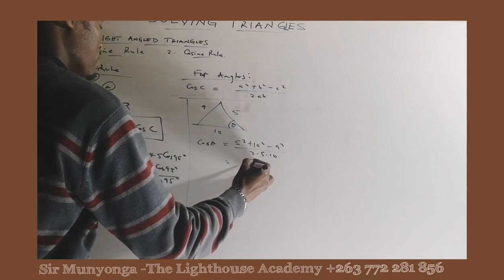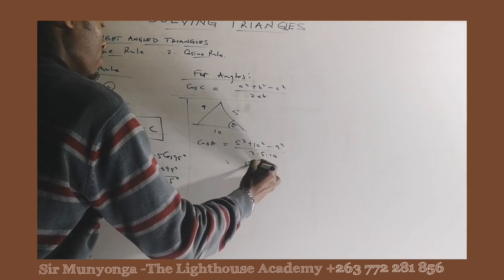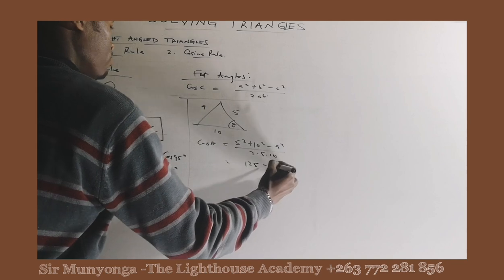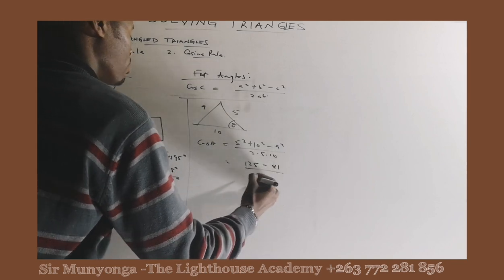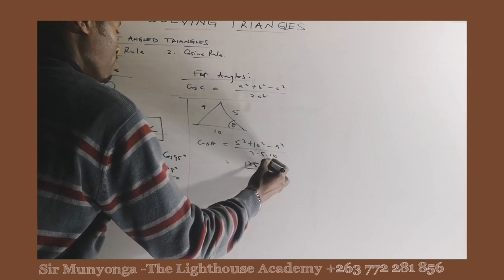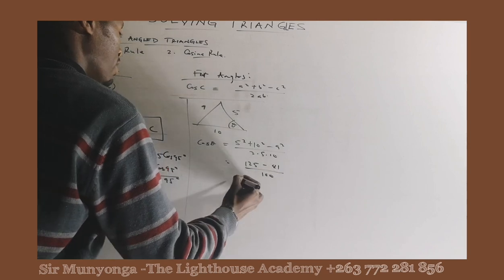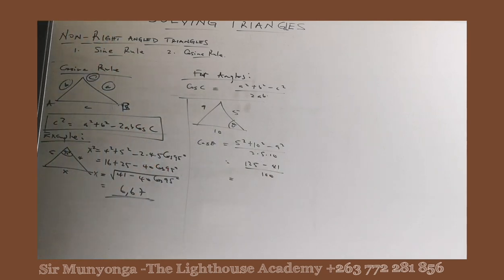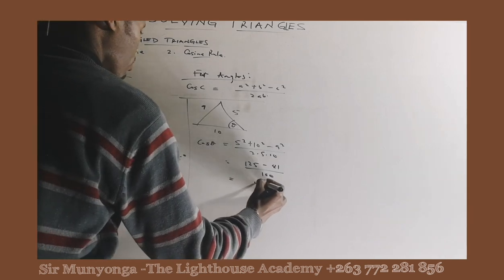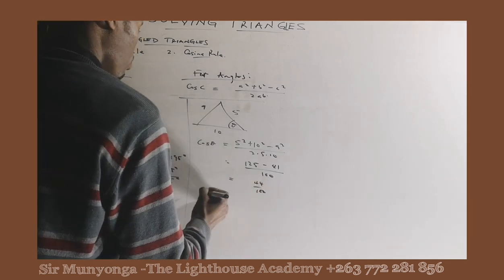5 squared is 25 plus 10 squared is 100 which is 125 minus 81 over 2 times 5, 10 times 10 is 100. Now 125 minus 81 that's 44. 44 over 100.